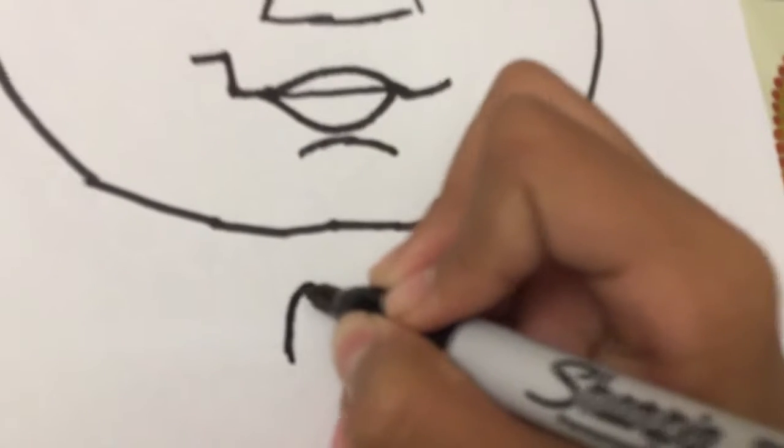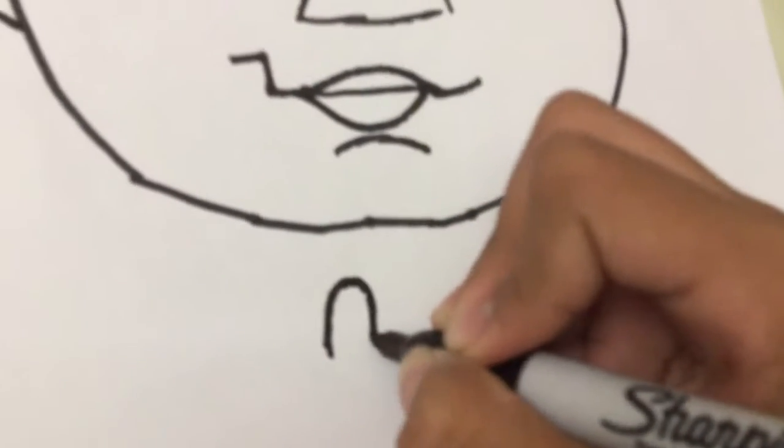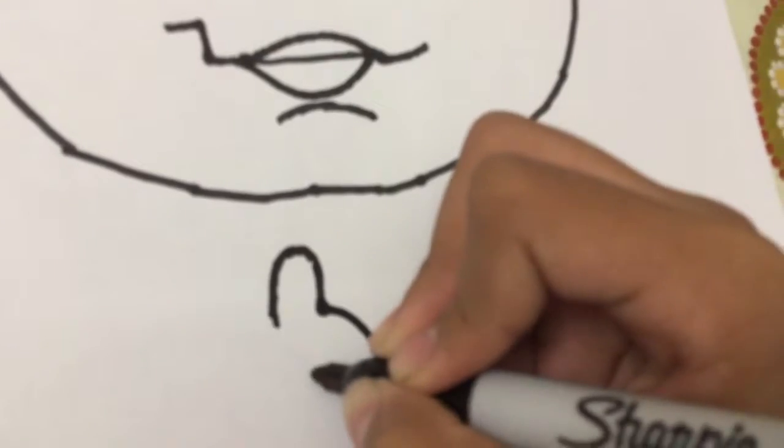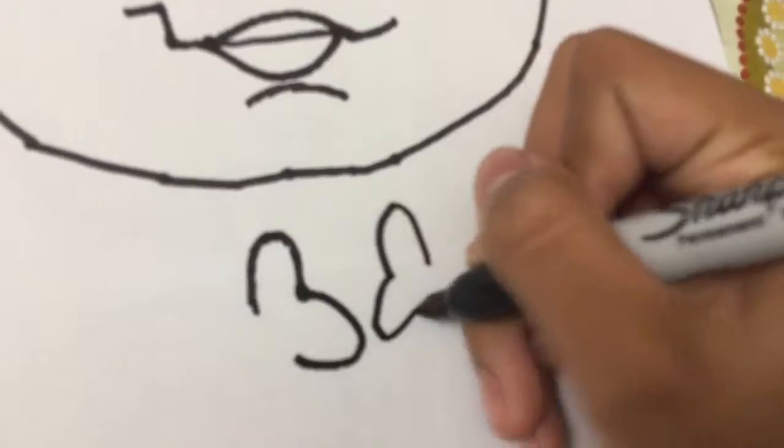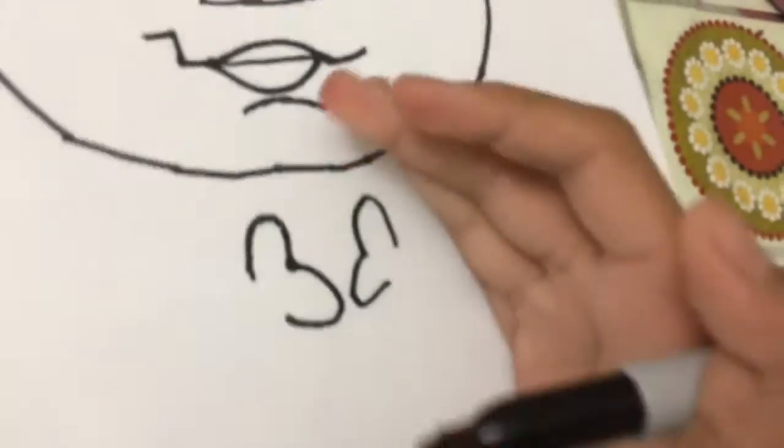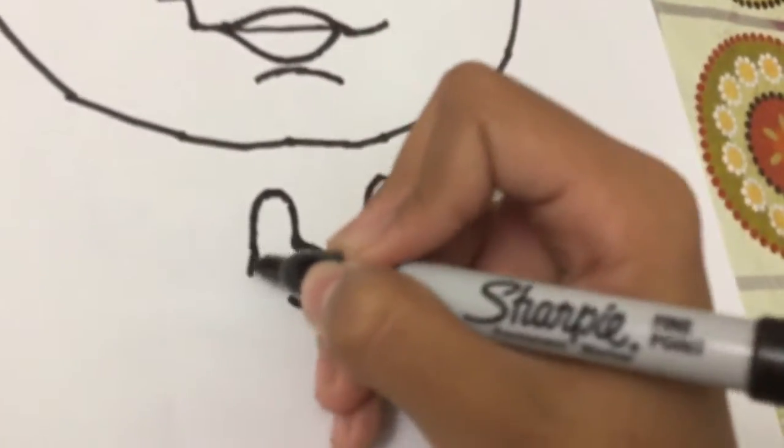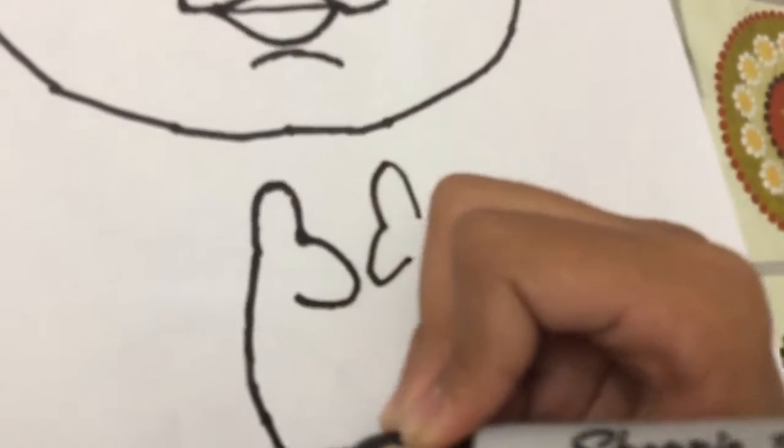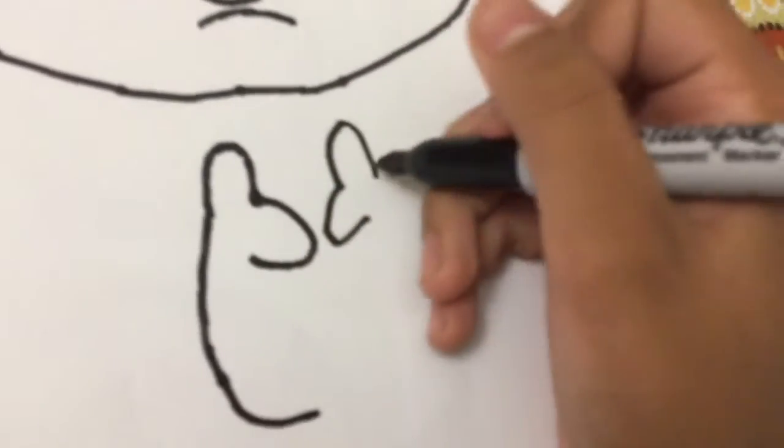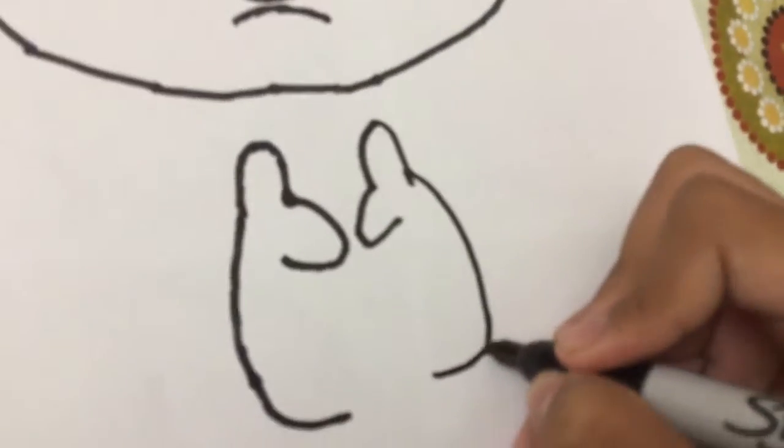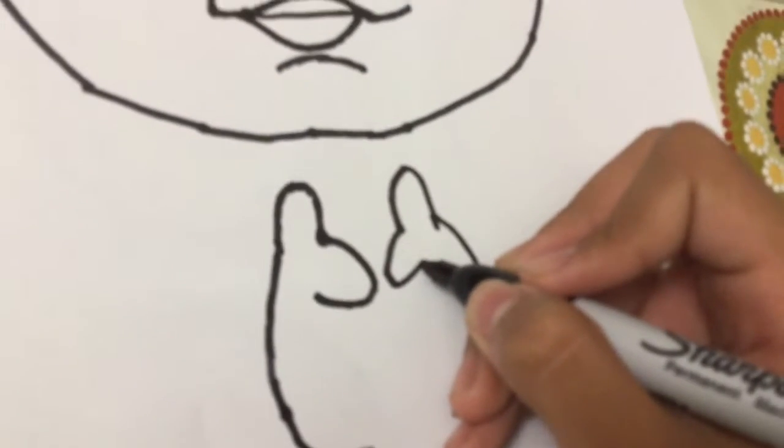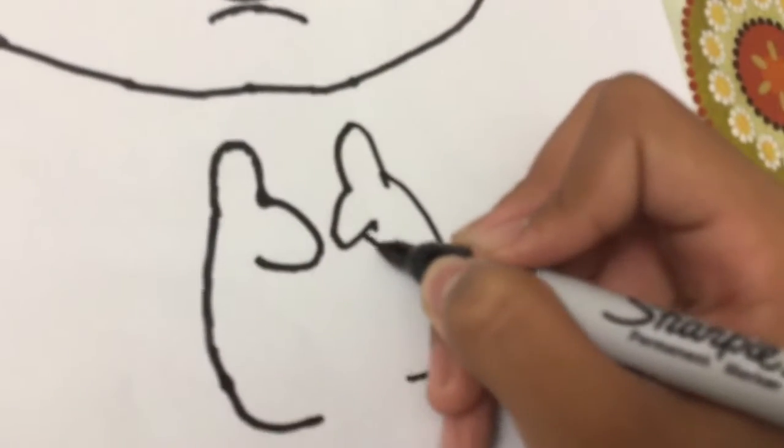Okay, now for Boss Baby's hands and body. So his hands - this is his thumb, and then another one here. Same on the other side like this. And next we're gonna just curve back down like this. Same here like this, and then it comes here.